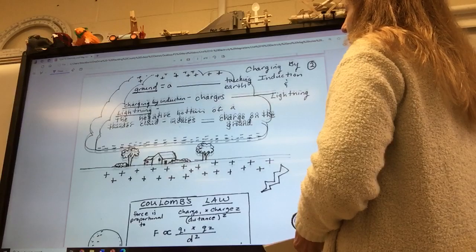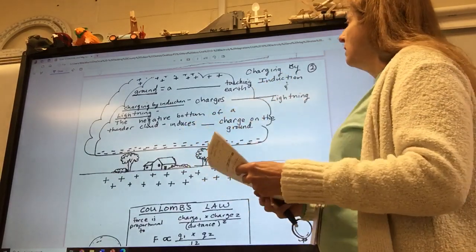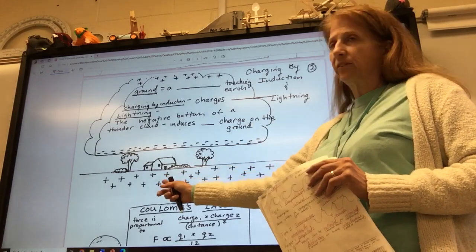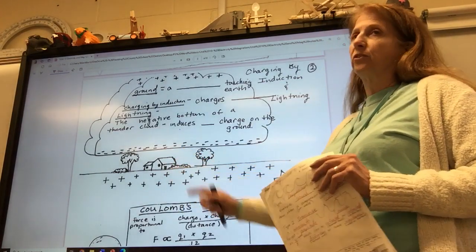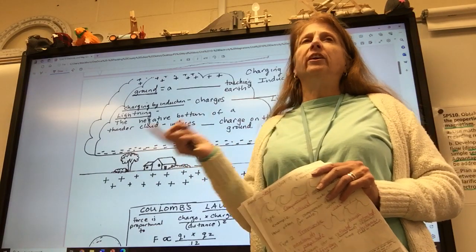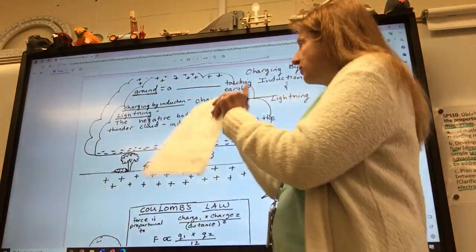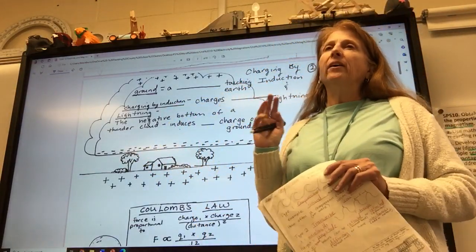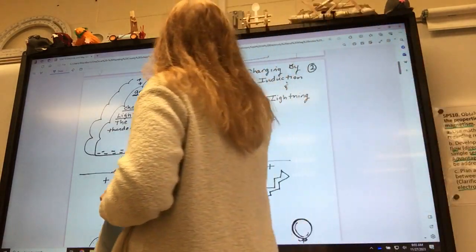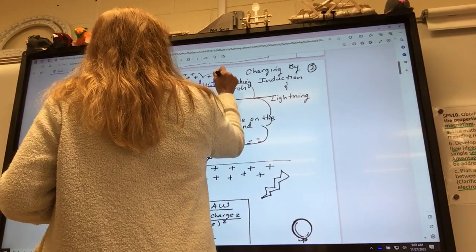So here we've got a cloud. We're going to talk about lightning. On the ground, this is ground, right? Here's my little house. Here's the ground. But in electricity, there's also something called a ground. And what that is, is it's a conductor touching the earth.